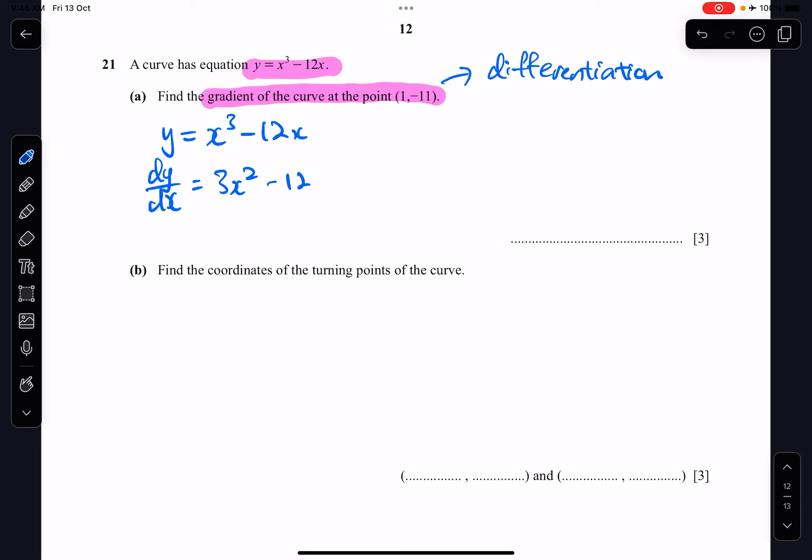And because I want to find the gradient at a point 1 negative 11, I know the x value is 1. So the gradient will be equals to 3. I substitute x to be 1. Then I'll calculate it. So it's 3 minus 12, which will be negative 9. So the gradient is negative 9.